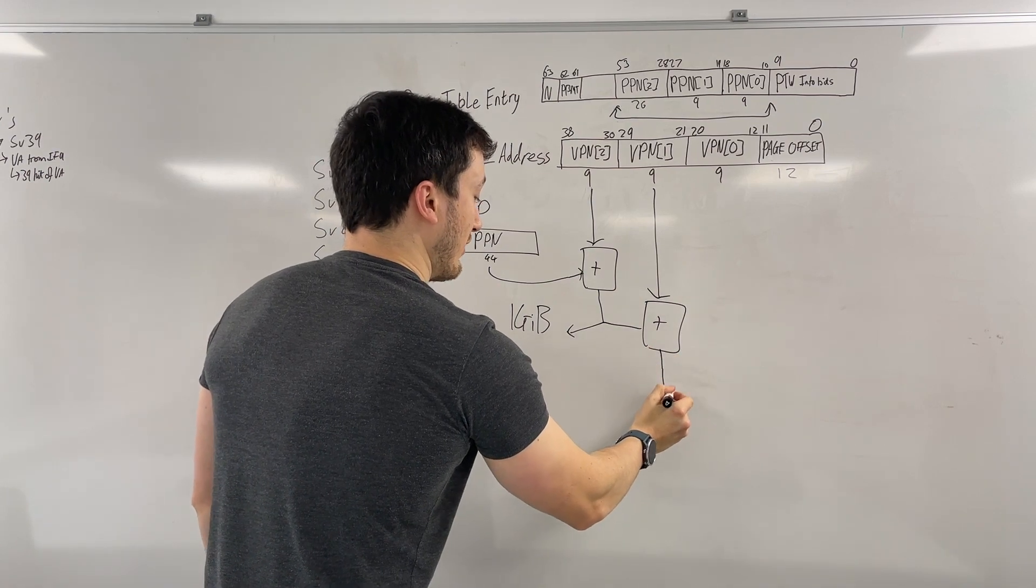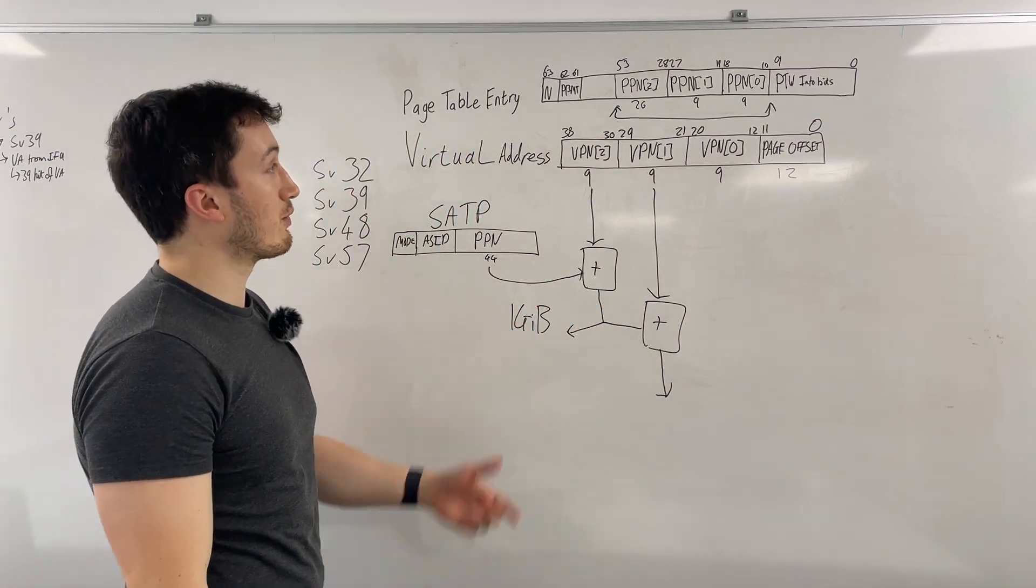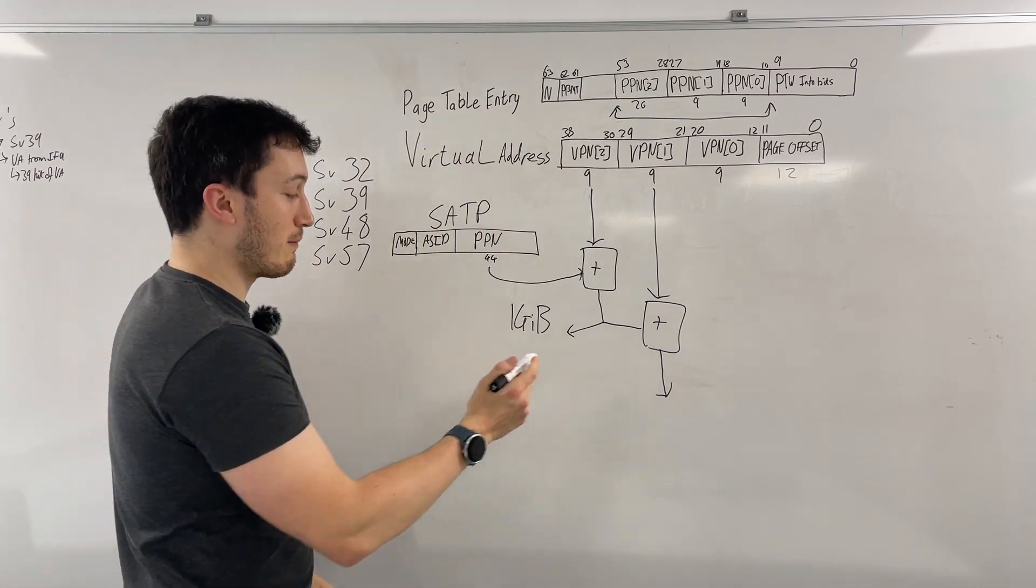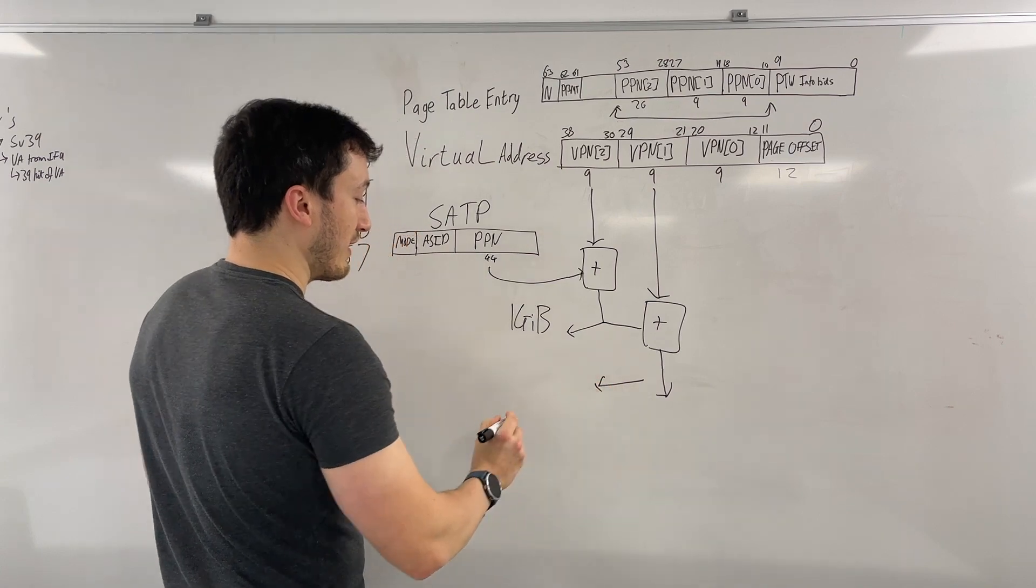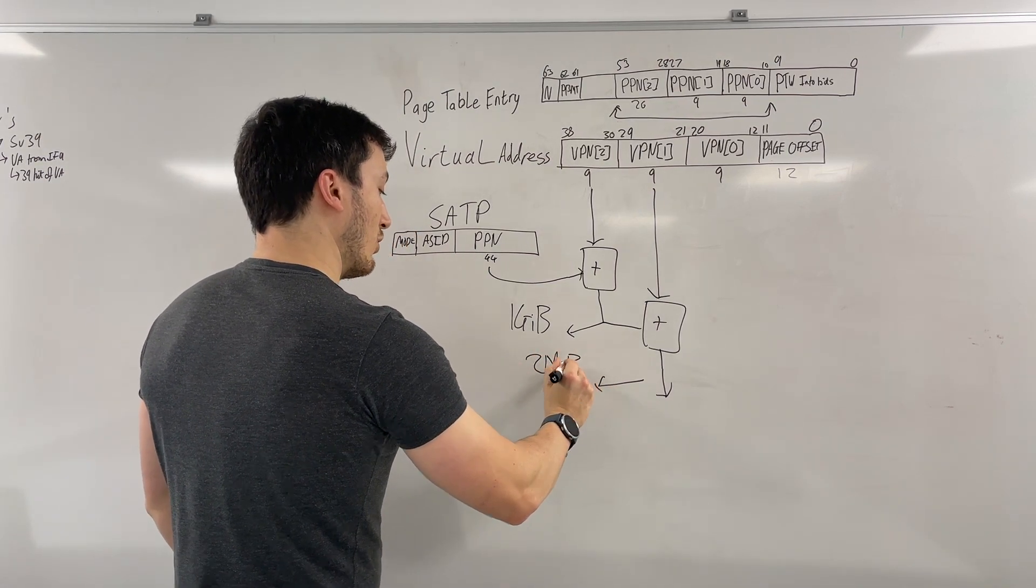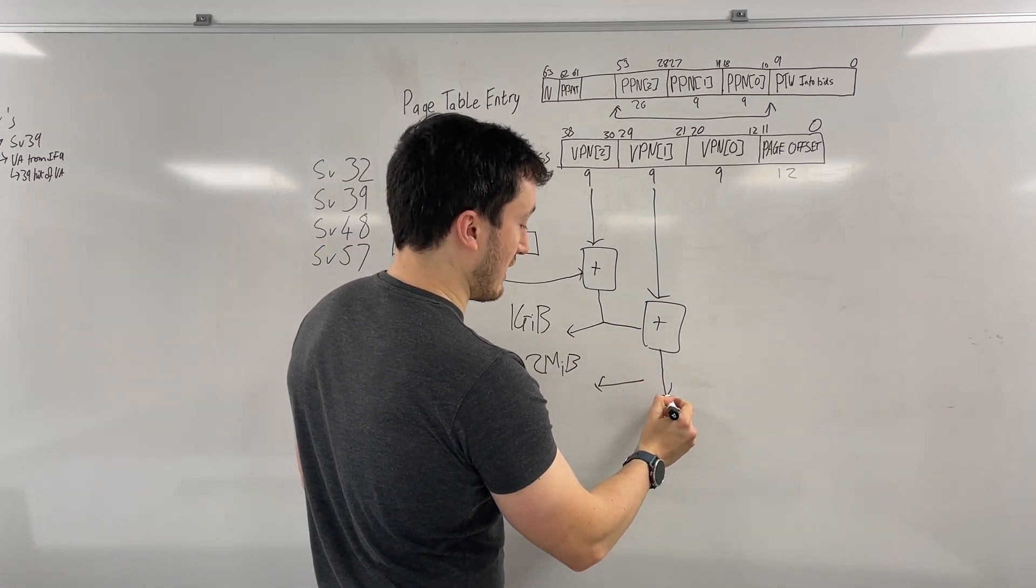And from there, you have another physical address and you can go request that from memory and it will come back with another page table entry. And we can repeat the same process and find out it's a two megabyte page or it's a non-leaf page. And if it's a non-leaf page, we go to the next step.